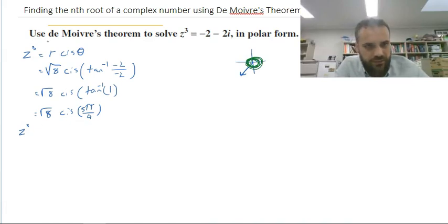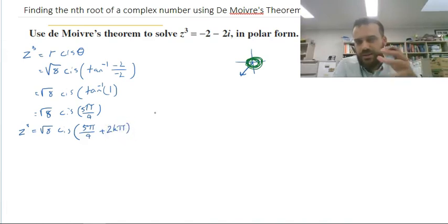So to account for this, we're going to say that z cubed is equal to root 8, cis, 5 pi on 4, plus 2k pi, where k is a natural number.